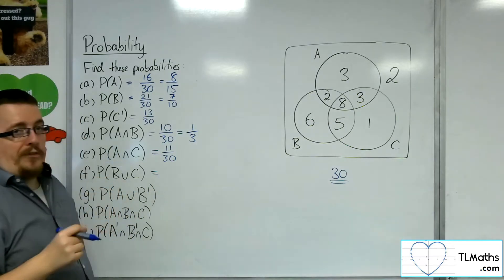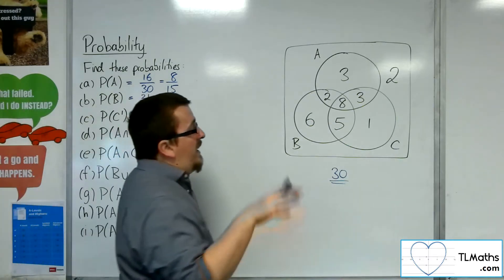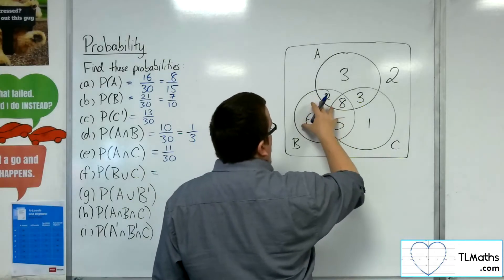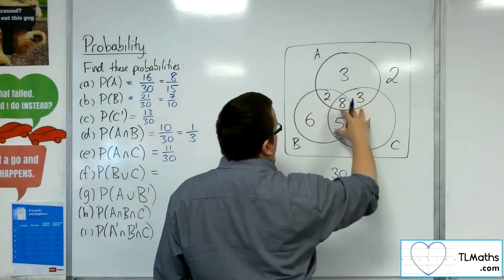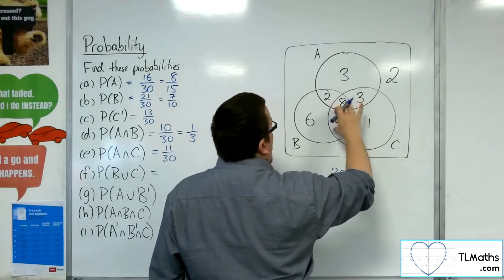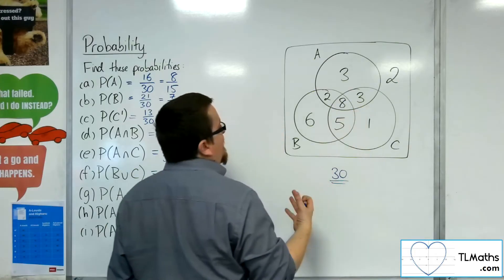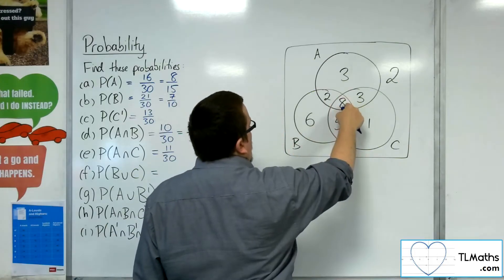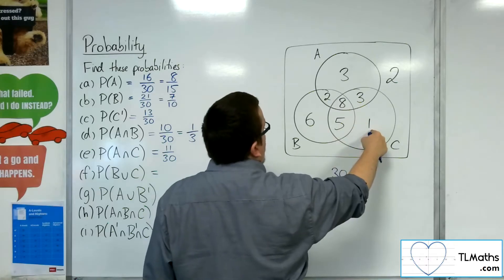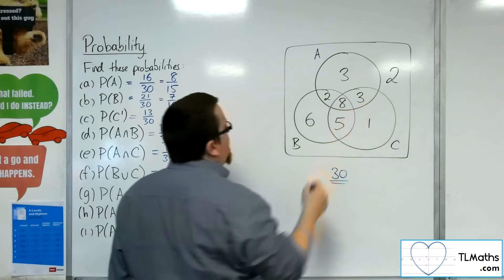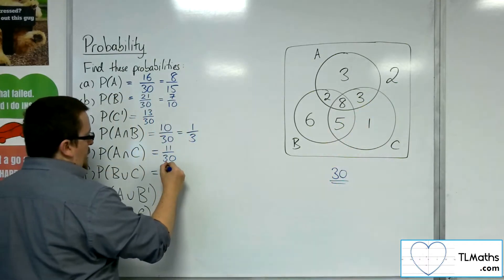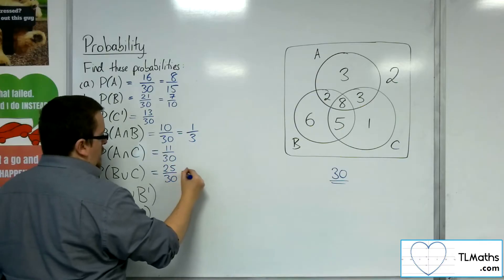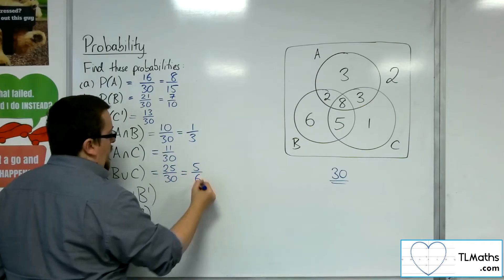Probability of B union C — B or C or both. Anything that is in B, anything that is in C, and anything that is in the intersection, all added together. So we've got 6, 8, 16, 21, 22 — 25 out of 30, which is 5 sixths.